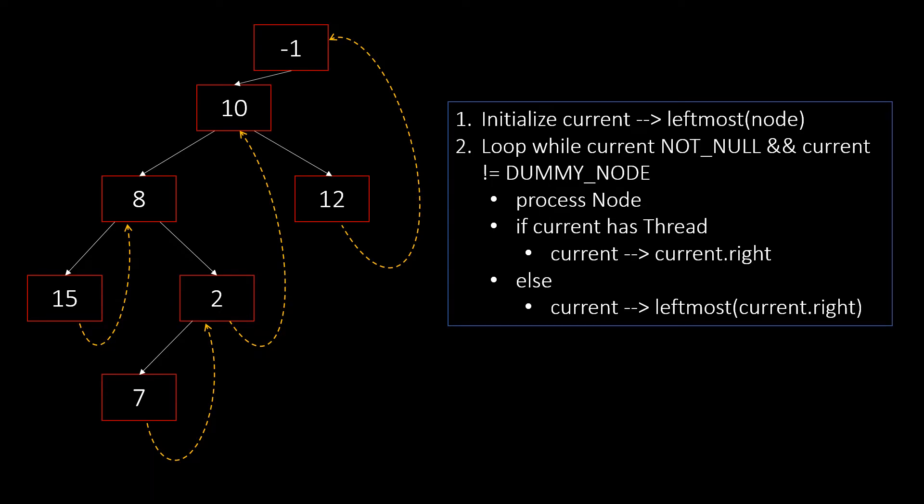We initialize a variable current with the leftmost node of the root or dummy node. Then we start a loop. We loop while the current node is not null and it is not the dummy node. If so, we process the node and update the current node. To update it, we check if the current node has thread.